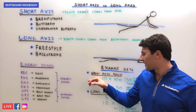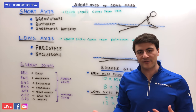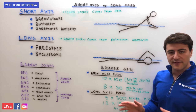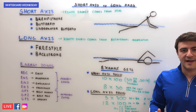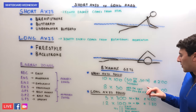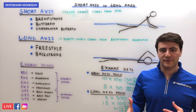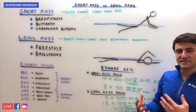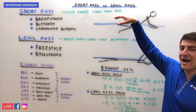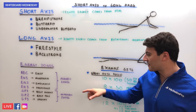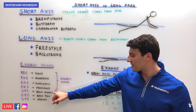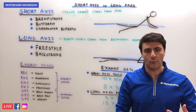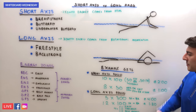For a short axis stroke — breaststroke or butterfly — an example set is 10x100s: the first 50 is butterfly (or breaststroke), the second 50 is freestyle. On the first 50 you're trying to hold 200 pace, teaching your body to swim at race intensity while staying higher in the water. So you're spending the first half in the anaerobic zone at best average, and the second half is easy freestyle in the aerobic zone — on a two-minute interval.